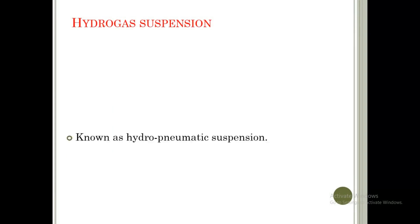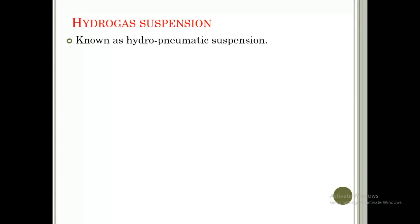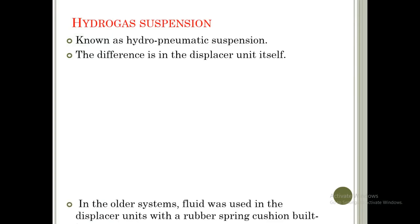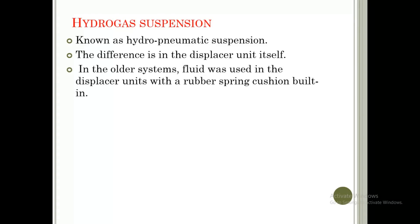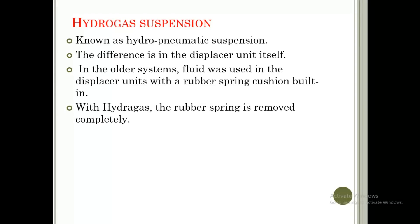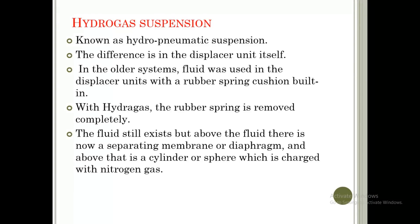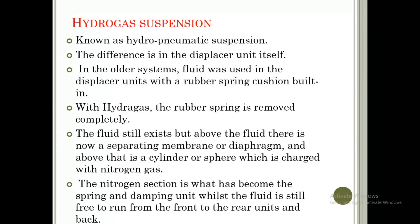The hydrogas suspension is also known as hydro-pneumatic suspension. The difference from the hydroelastic system is in the displacer unit itself. In the older system, fluid was used in the displacer unit with a rubber spring cushion built in. With hydrogas, the rubber spring is removed completely — the fluid still exists, but above it there is a separating membrane or diaphragm, and above that is a cylinder charged with nitrogen gas. The nitrogen section acts as the spring and damping unit, while the fluid is still free to run from front to rear units and back.